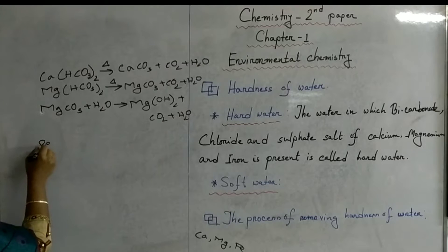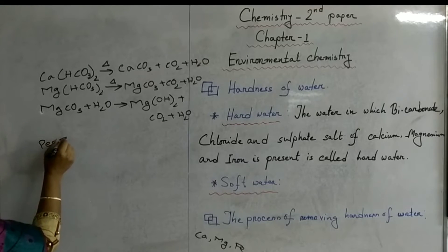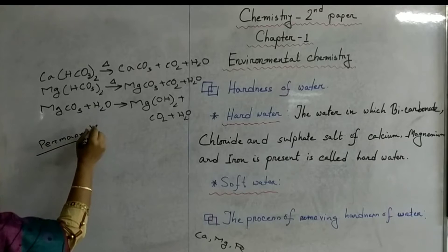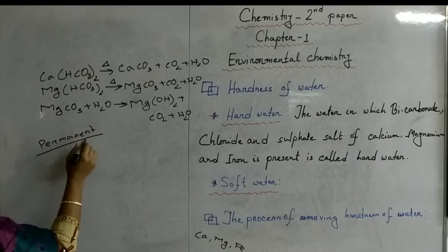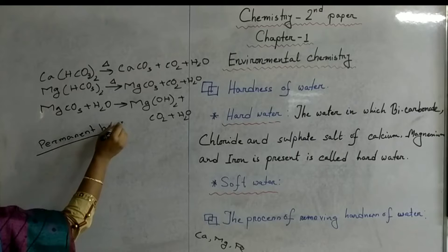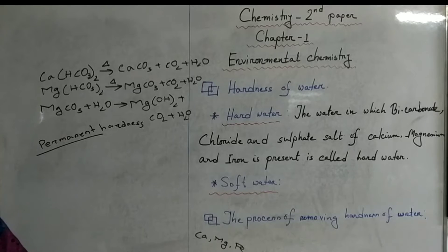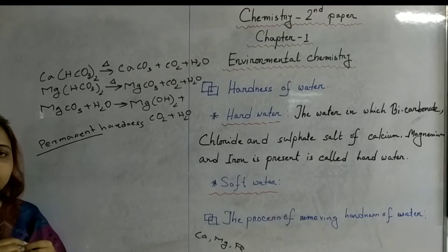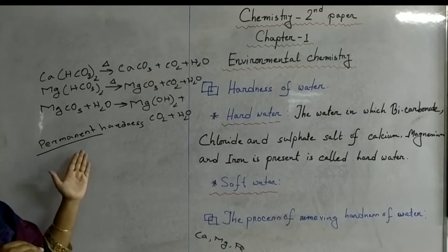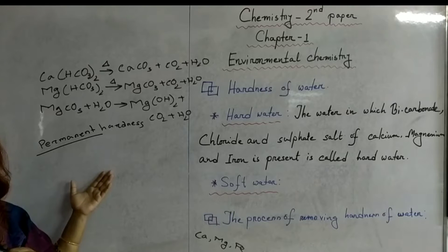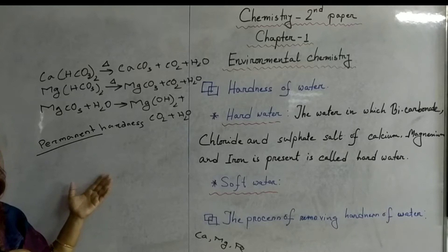Now come to permanent hardness of water. Whenever chloride and sulphate salts of calcium, magnesium, and iron are present in water, that is known as permanent hardness. Permanent hardness cannot be removed by boiling — we have to use another process, such as soda ash, ion-exchange resin, or the permutite process.